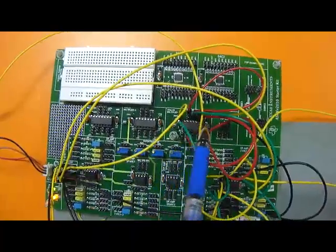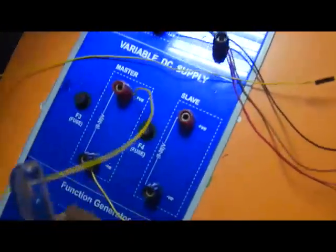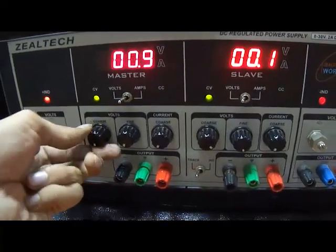Now we are going to see how the multiplier is connected to the variable DC supply. Here is the wire which is getting connected to the variable DC supply. As you can see here, the readings of the variable DC supply can be changed with these knobs.